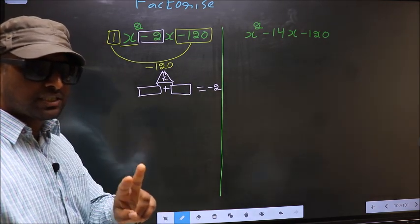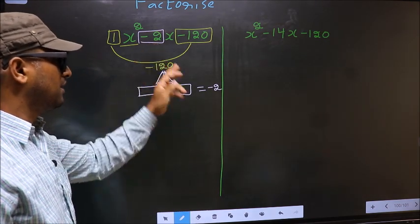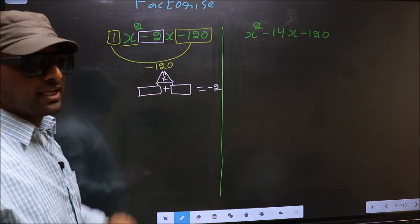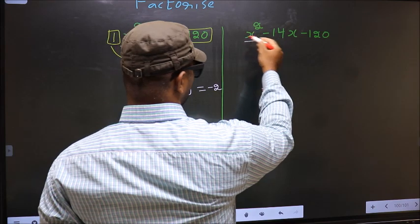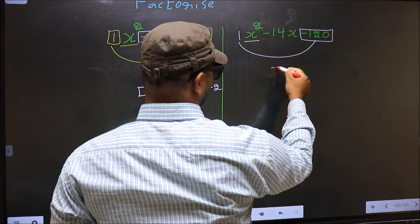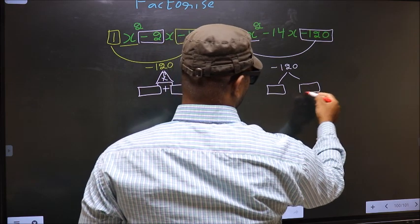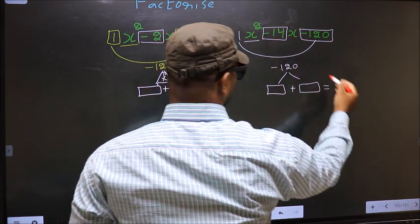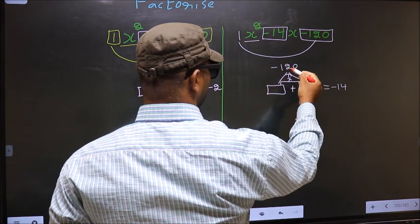Now do the same thing for the second expression: x squared coefficient 1 multiplied to the constant minus 120 gives minus 120. Look out for two numbers such that when you add them, you get the middle coefficient — here the middle coefficient is minus 14 — and when multiplied, you should get minus 120.